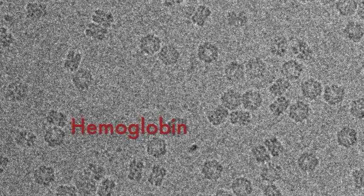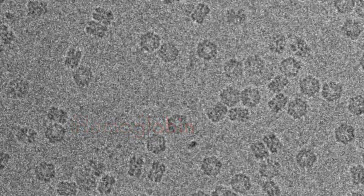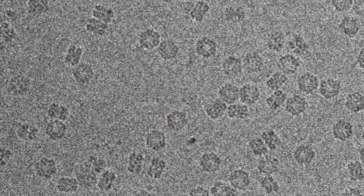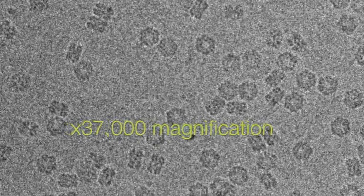Here on the right side you see an image that was shot with hemoglobin. You can see the molecules all over the image. This image was collected at about 37,000 magnifications.